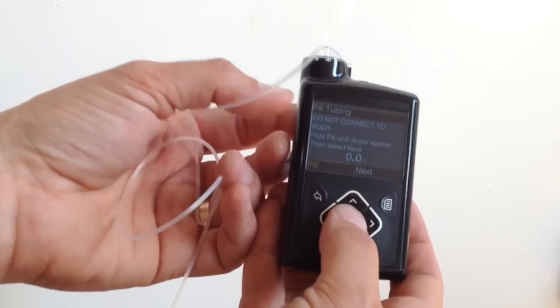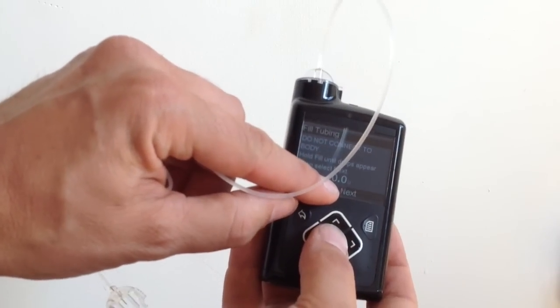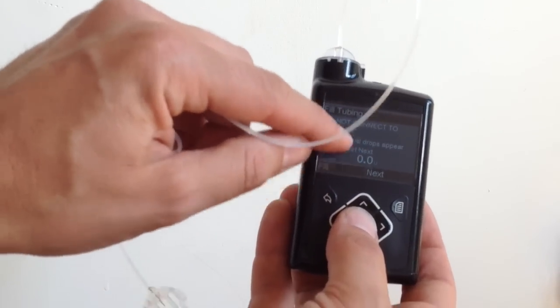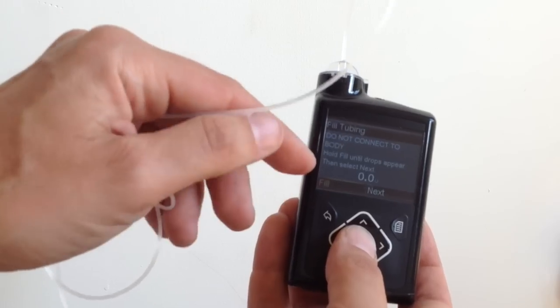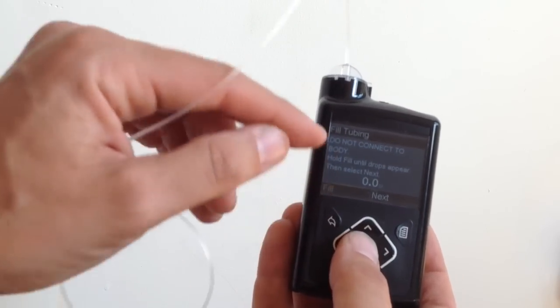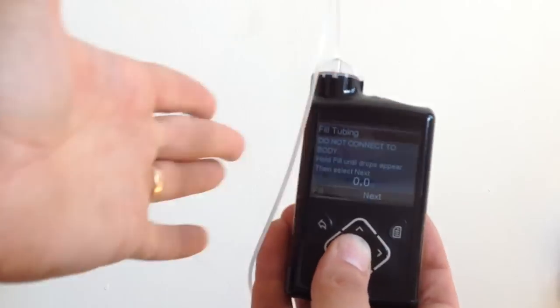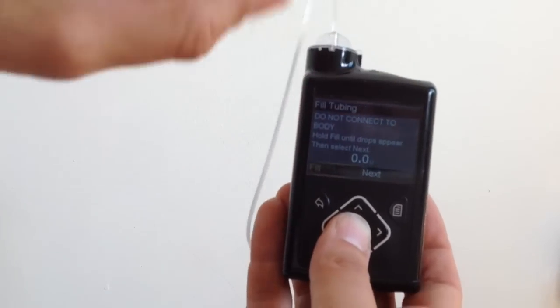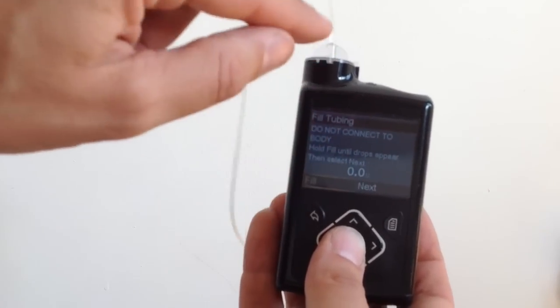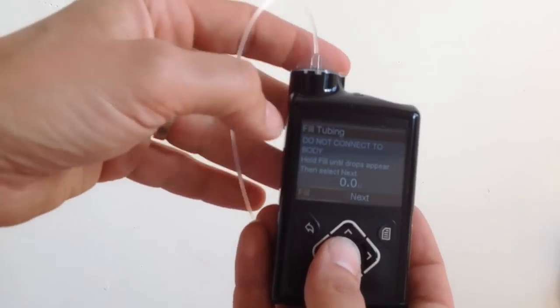So now it's filling the tubing. And you have units of going through the tubing indication there, just so you can check on how much is happening. And you just press the center button to fill. And again, while this is happening, I'm just going to be tapping the pump on all four sides. If there is a little bubble in there, hopefully it'll find its way into the tubing and we can prime it out.